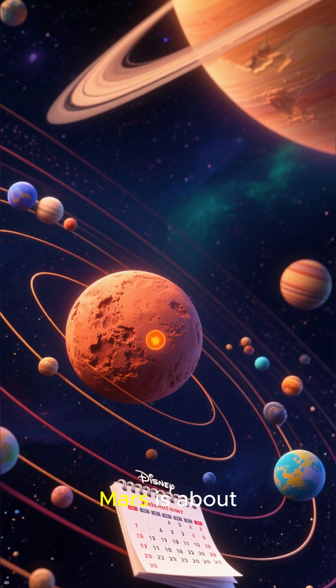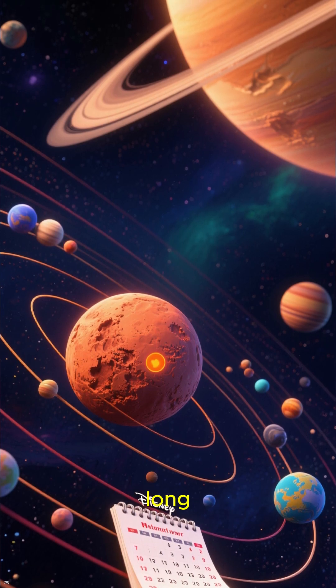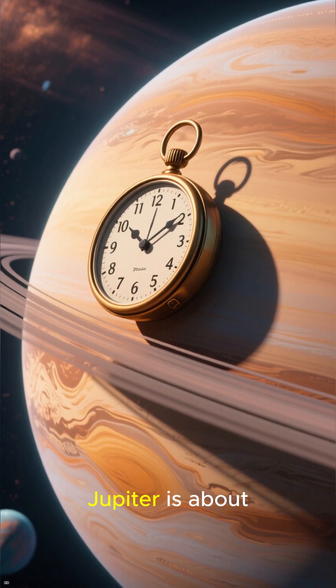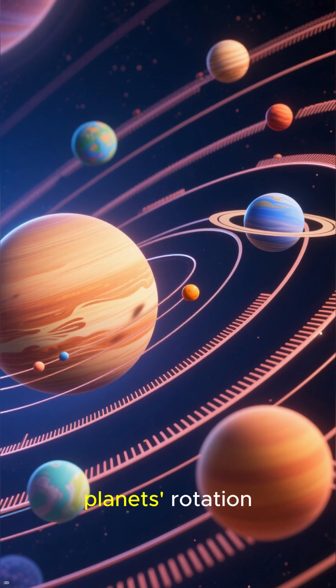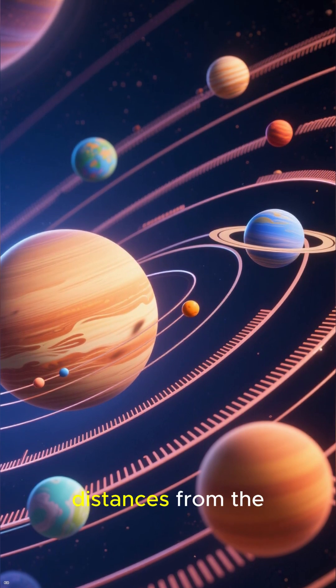At the same time, a year on Mars is about 668 Earth days long. On the other hand, a day on Jupiter is about 9 hours shorter than an Earth day. These differences in time are due to variations in the planet's rotation speeds and orbital distances from the sun.